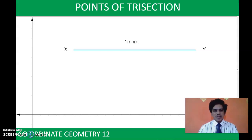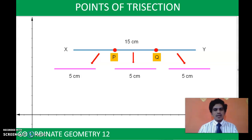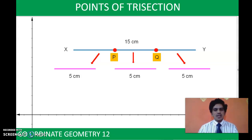Now we have another line segment XY whose length is 15 cm. We have to divide this into three equal parts — that means we are going to trisect it. As discussed earlier, we have to identify two points on it. If we cut along those two points, we get three pieces of XY, each of length 5 cm, since 15 divided by 3 is 5. Here, P and Q are called points of trisection because these two points divided the line segment into three equal parts.